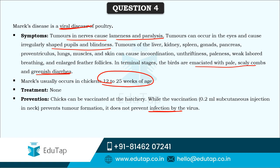The Marek's disease vaccination is given as a 0.2 ml subcutaneous injection in the neck. There are various kinds of vaccination — live, attenuated, dead, or killed — and various methods of administration.